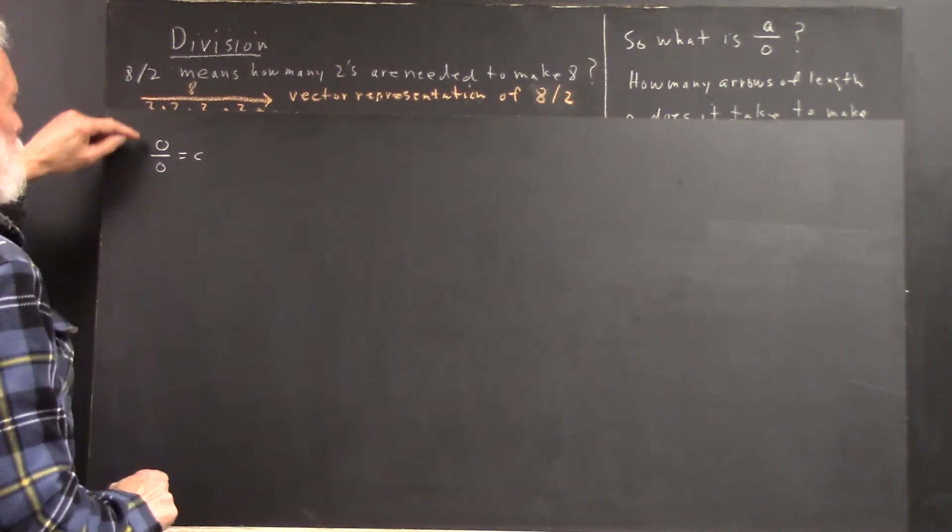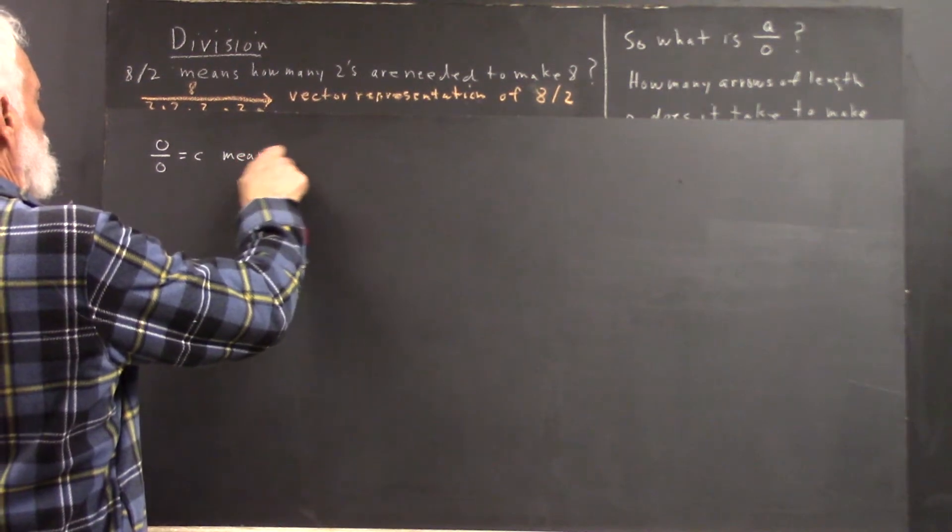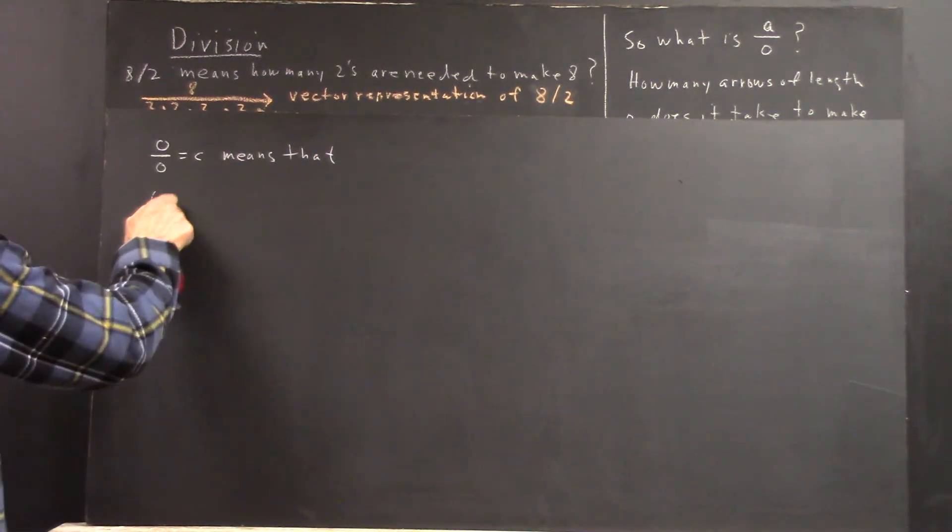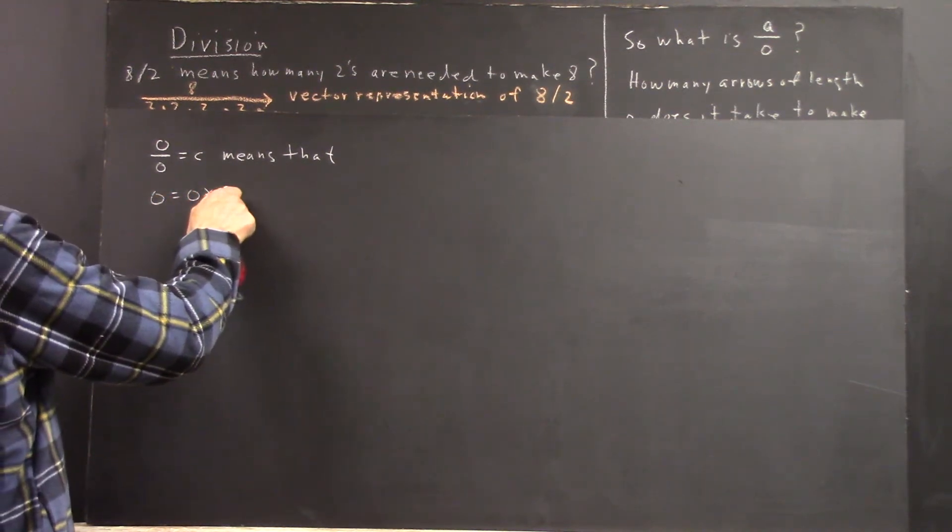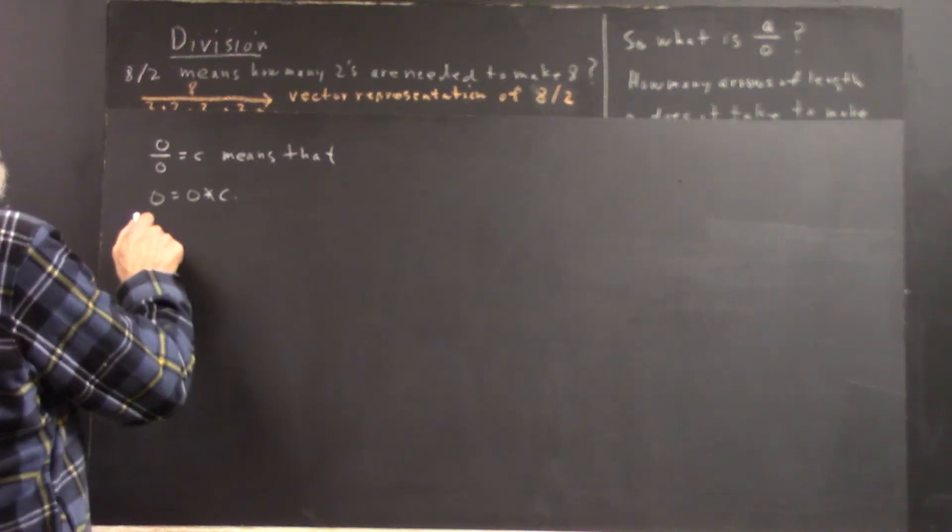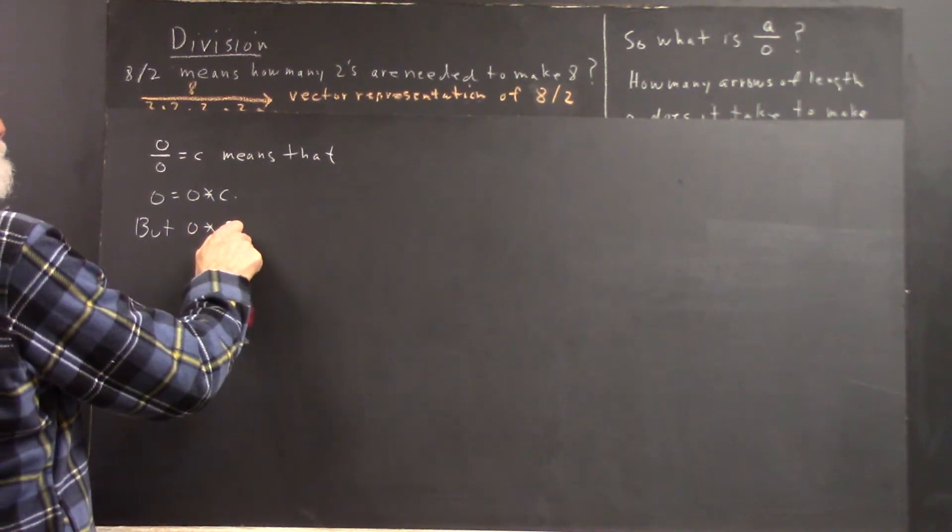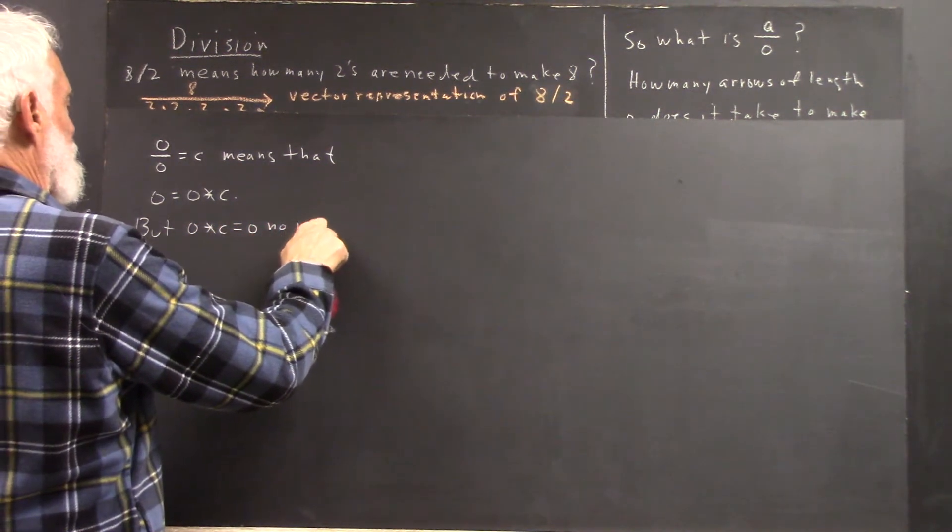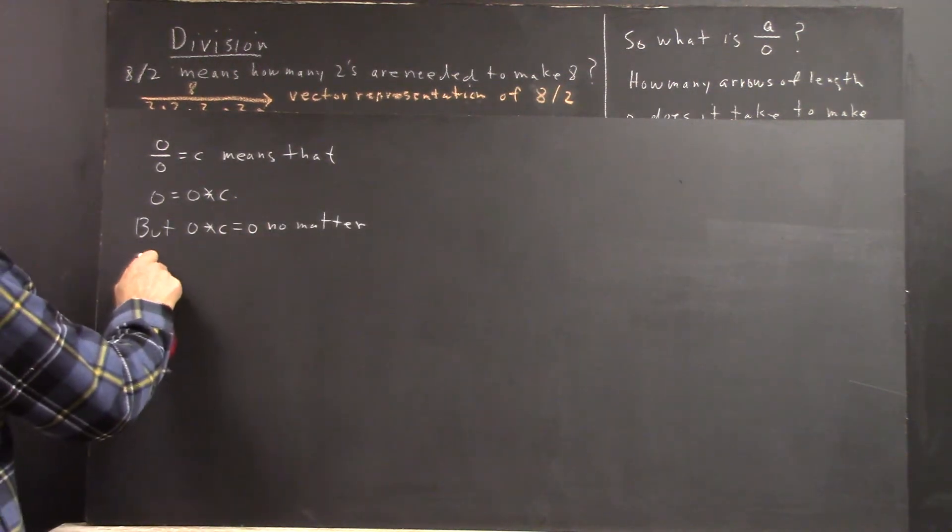0 over 0 equals C means that 0 equals 0 times C. 0 times C is 0 no matter what C is.